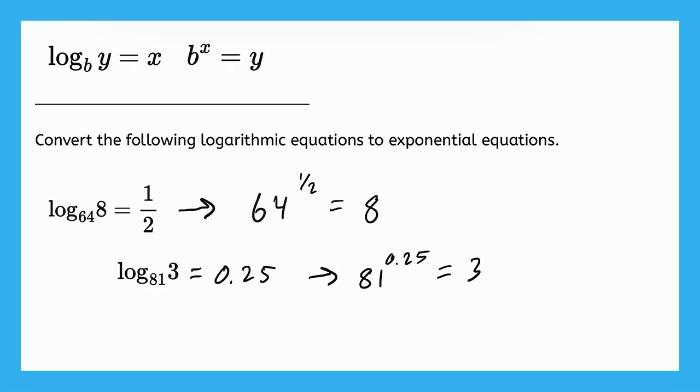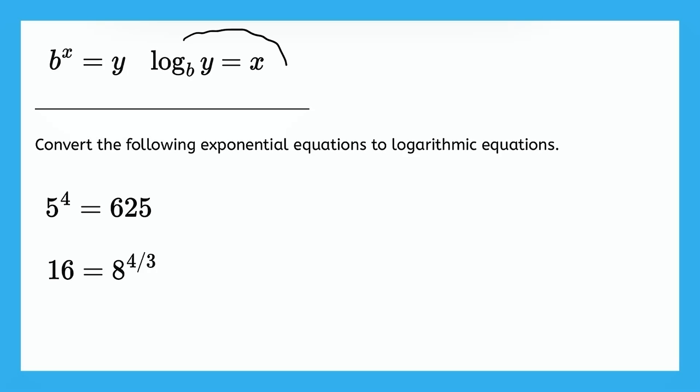All right, now let's practice converting from exponential equations to logarithmic equations. So here we have that same guide that we used before. You'll notice that I just put the exponential first because we're starting with exponential. And then I put the logarithmic second right here. So basically we want this equation to look like this logarithmic equation. So 5 we know corresponds to b, 4 corresponds to x, and 625 corresponds to y. So this 5 is going to move into the base of the log. This 4 is going to move to the other side of the equation. And this 625 is going to move into the last part of our logarithmic expression.